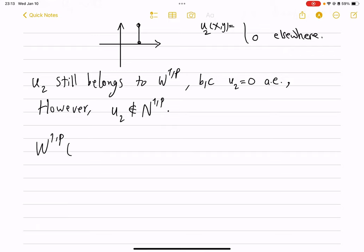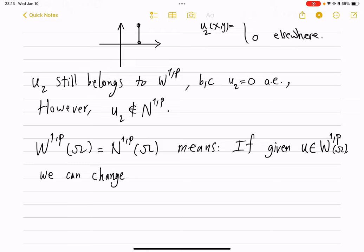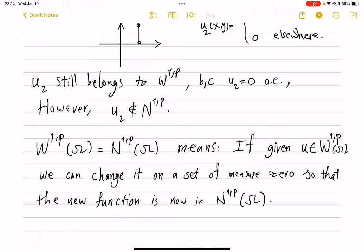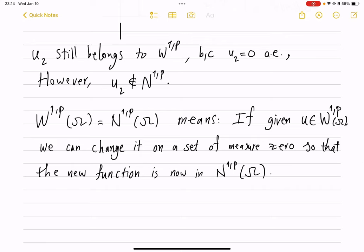So W^{1,p} of omega equals to N^{1,p} of omega means if given a function u in W^{1,p}, again, everywhere defined of omega, we can find, we can adjust it, we can change it on a set of measure zero so that the new function, which we distinguish because our functions we don't identify, is now in N^{1,p} of omega.